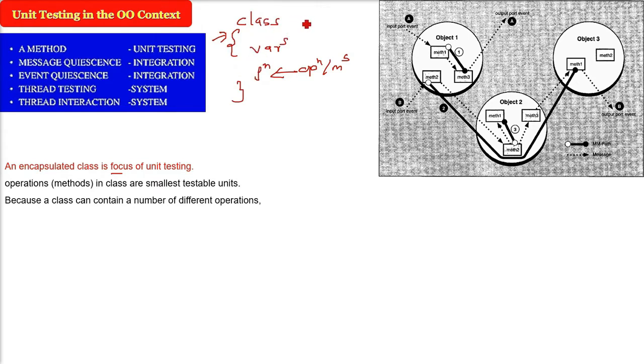For example, if this class, let's say any name, calculator or operations. So what all operations can be there? It can have add, it can have multiply, it can have division and many others. So a class can contain different variety of functions or operations.